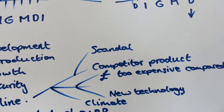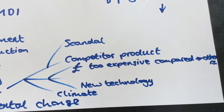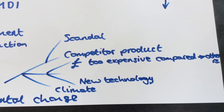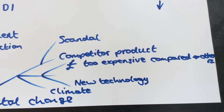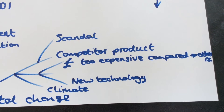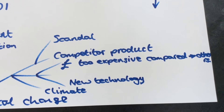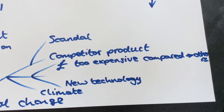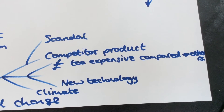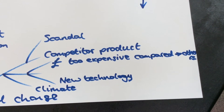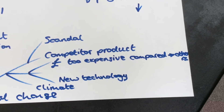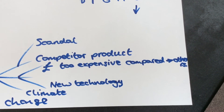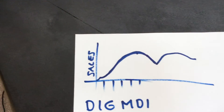Let's have a look at some of the reasons for decline. Maybe there's a scandal in the company — for example, something like Starbucks, where they got caught not paying their taxes. Maybe there's a scandal involving the chief executive, or like Volkswagen, where they forged the emissions tests. There might also be a competitive product which has come along, or the product might be too expensive compared to others because competitors are lowering their prices — therefore sales will go into decline.